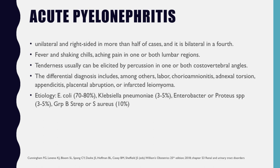The differential diagnosis for acute pyelonephritis includes labor, chorioamnionitis, adnexal torsion, appendicitis, placental abruption, or infarcted uterine myoma. The etiology usually includes E. coli in 70 to 80% of cases, but can also involve Klebsiella pneumoniae, Enterobacter or Proteus species, and group B strep or Staph aureus.